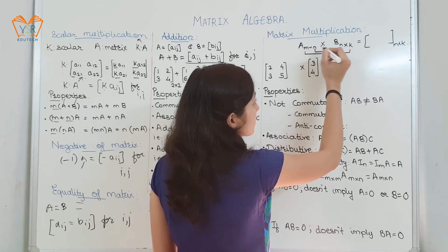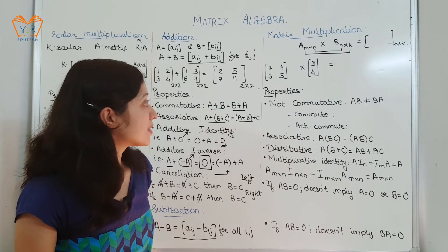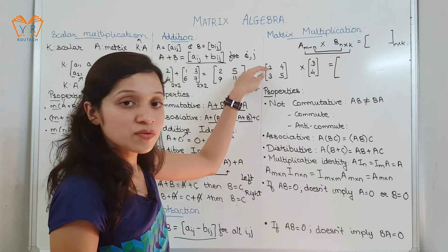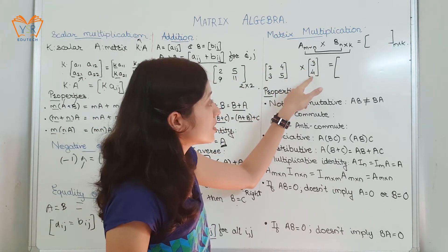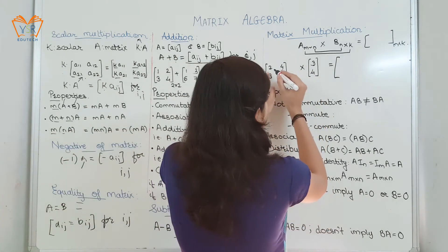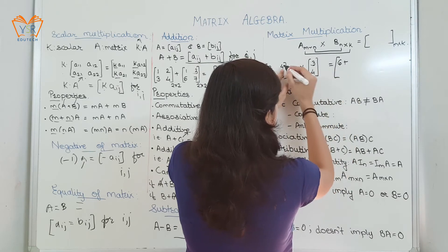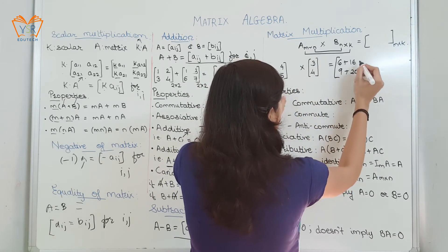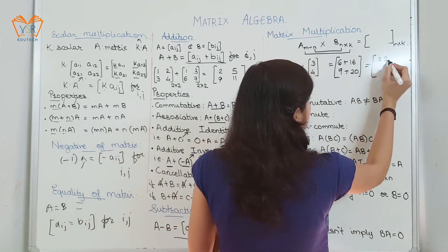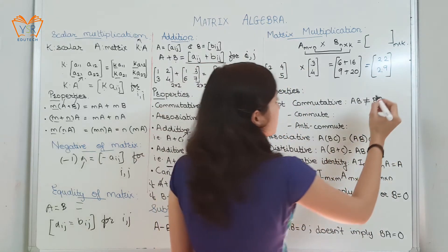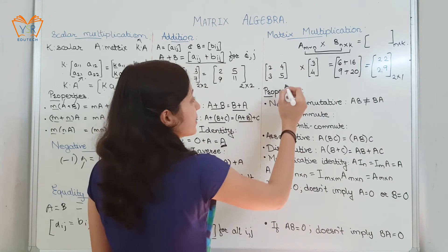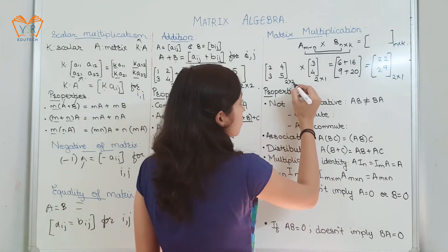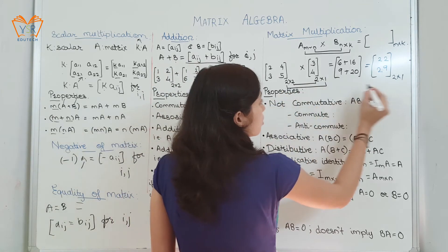For matrix multiplication, elements of the rows of the first matrix are multiplied with the column elements of the second matrix and added together. For example: 2×3=6 plus 4×4=16; 3×3=9 plus 5×4=20, giving results 22 and 29. First matrix of size 2×2, second of size 2×1 — they are conformable because the inner dimensions match (2=2), and the resulting size is 2×1.